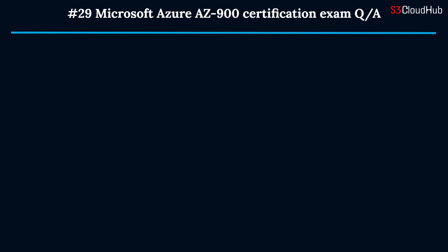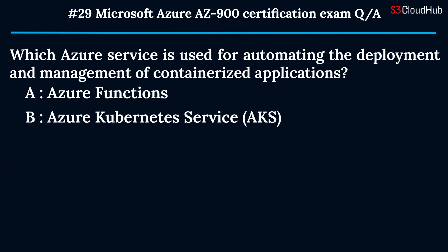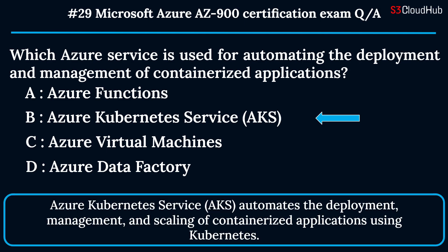The twenty-ninth question: which Azure service is used for automating the deployment and management of containerized applications? Option A: Azure Functions. Option B: Azure Kubernetes Service (AKS). Option C: Azure Virtual Machines. Option D: Azure Data Factory. The correct answer is option B. Azure Kubernetes Service (AKS) automates the deployment, management, and scaling of containerized applications using Kubernetes.